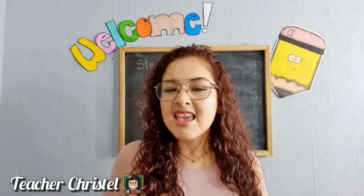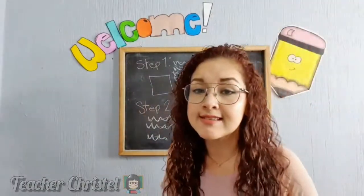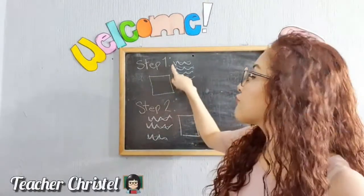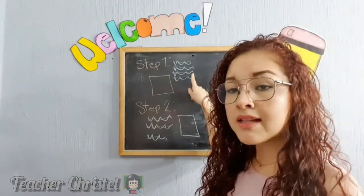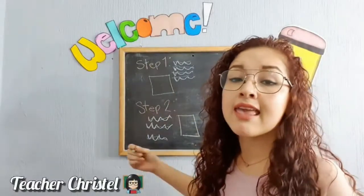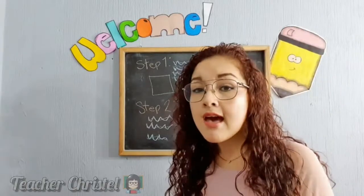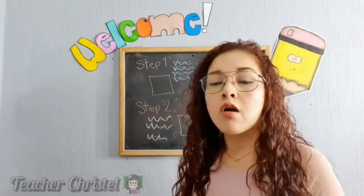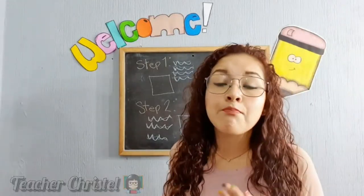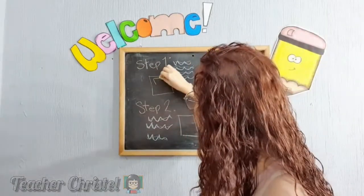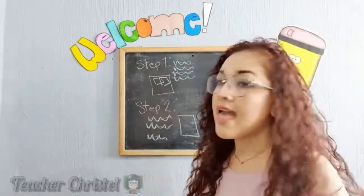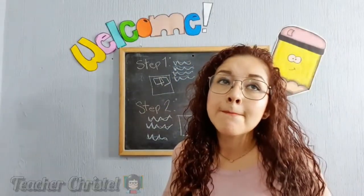My craft is a flower. My first step is to get all my materials together. I'll write 'get my materials ready' and then draw a picture — for example, a pencil, scissors, or glue. Since it's a flower, I'll use paper of different colors and a pencil.